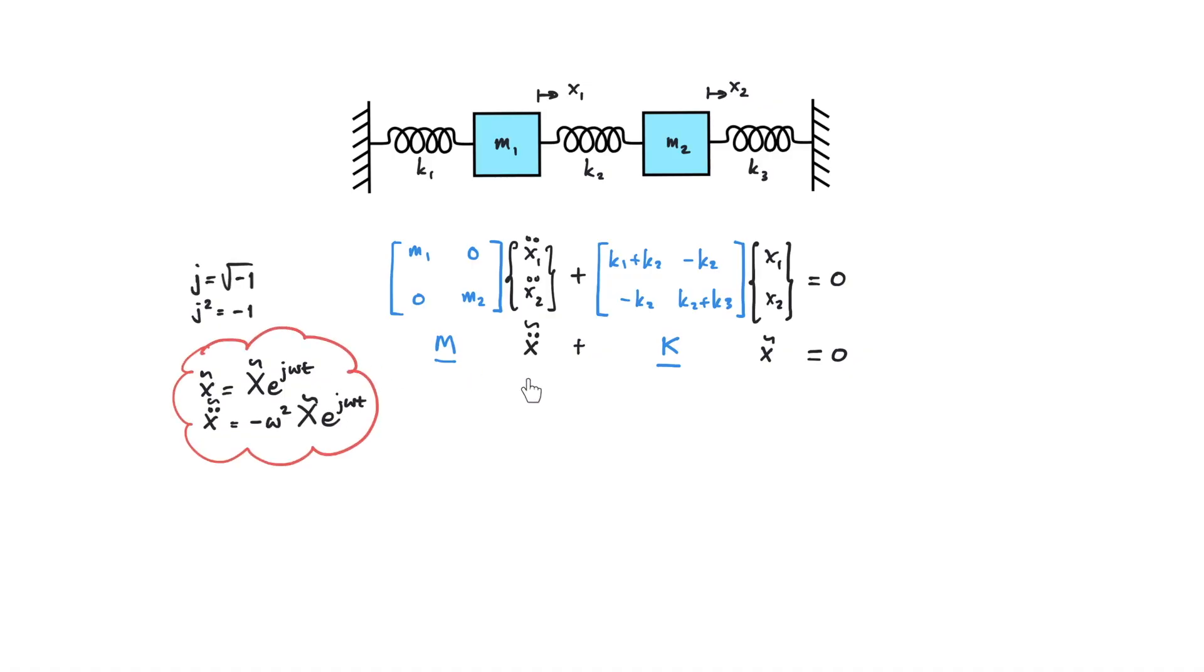Then if we substitute this to the matrix equations we have minus omega square M X e to the power j omega t plus K X e to the power j omega t equals to zero. We can exclude the exponential terms here and if we rearrange this equation by locating the stiffness matrix on the front, so we have K minus omega square M X equals to zero.